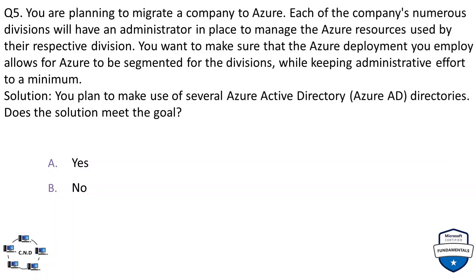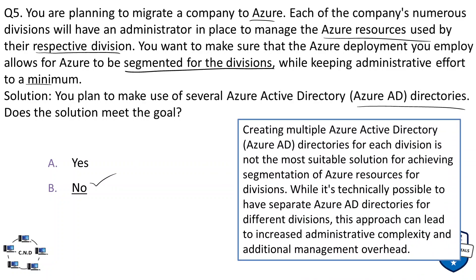Question number five: you are planning to migrate a company to Azure. Each of the company's numerous divisions will have an administrator to manage Azure resources for their respective division. You want to ensure that the Azure deployment allows Azure to be segmented for divisions while keeping administrative effort to a minimum. The solution proposed is to make use of several Azure Active Directories. The correct option is no. Creating multiple Azure Active Directories for each division is not the most suitable solution, as it can lead to increased administrative complexity and additional management overhead.